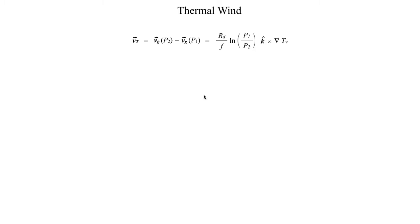As you recall from the previous segment, this was the mathematical result that we got from that really long derivation. If we want to, a lot of times you will see this left-hand side instead of expressed as geostrophic wind at pressure 2 minus geostrophic wind at pressure 1, sometimes you will also see that written as the geostrophic wind at the upper level minus the geostrophic wind at the lower level, just to make things a little bit more straightforward.